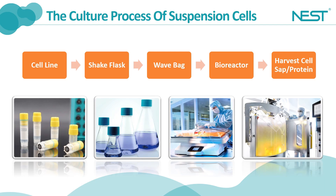After the transfected cell line is screened out, culture expansion of these cells is performed in shake flask. At the stage of shake flask culture, the optimum culture conditions are obtained via exploration and the cells receive further culture expansion. The maximum volume of Nest shake flask is 5 liters, and then the culture will be transferred to a wave bag and bioreactor gradually.